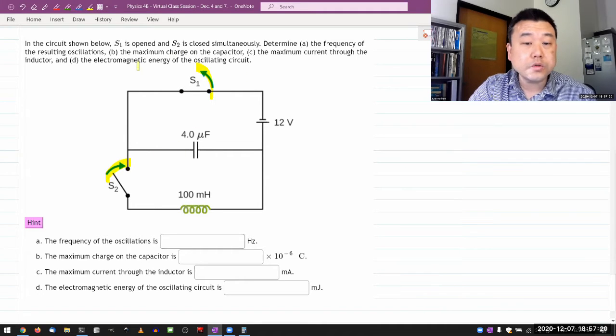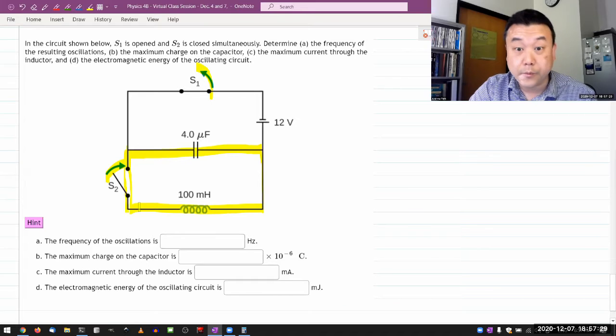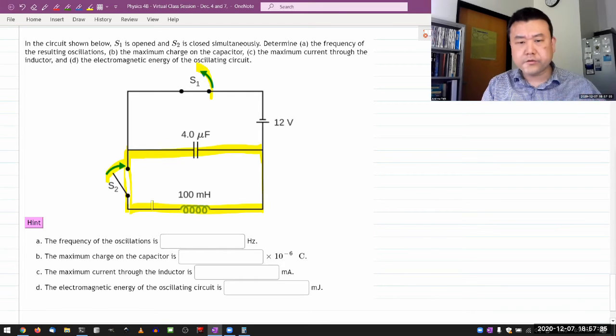Determine A, the frequency of resulting oscillations. All right, that seems simple enough. I'm looking at a basic LC circuit, and there's a formula that I'm just going to use. So let me just work through here.